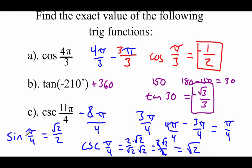Now as far as this sine — and for that matter this cosecant — since we're looking at a second quadrant angle, sine and cosecant are both going to be positive in the second quadrant. So I'm not going to make a change to this answer; I'm just going to leave it as the square root of 2.